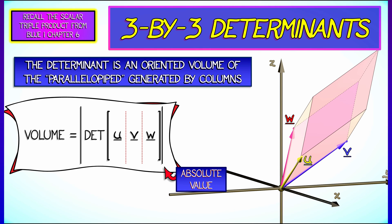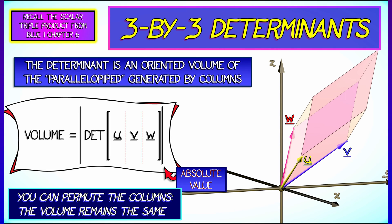What we were really doing when we computed that was a determinant, where you take the three vectors that span that parallelopiped, u, v, w, stack them as columns of a matrix, take the determinant of that, take the absolute value.